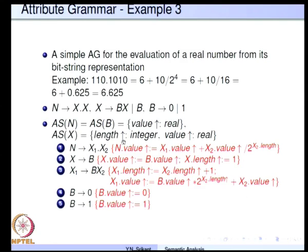The moral of these two examples is that sentences in the language may be the same, the context-free grammars may differ, and thereby the attribute grammars for computing the same value may also have to differ.